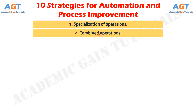Strategy No. 2: Combined Operations. Production occurs as a sequence of operations. Complex parts may require dozens or even hundreds of processing steps. The strategy of combined operations involves reducing the number of distinct production machines or workstations through which the part must be routed, by performing more than one operation at a given machine, thereby reducing the number of separate machines needed. Since each machine typically involves a set-up, set-up time can usually be saved by this strategy. Material handling effort, non-operation time, waiting time, and manufacturing lead time are all reduced.